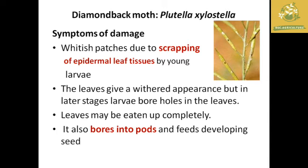The first symptom of diamondback moth is scraping of the epidermal leaf tissues by the larva. It also bores into the pods and feeds on the developing seeds. These are the major symptoms we need to know about the diamondback moth, along with their identification and biology.